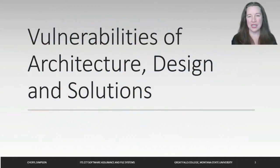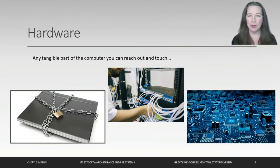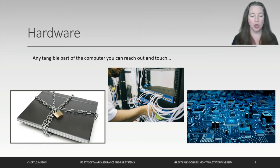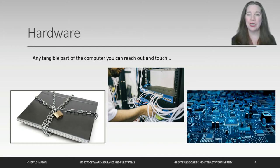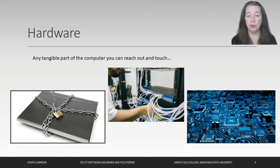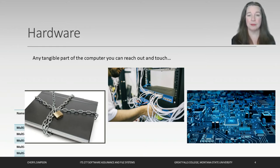The first thing we're going to talk about is hardware vulnerabilities. To understand hardware, the easiest way to explain it is it's something tangible that you can touch — your memory, your hard disk, your motherboard, your monitor, your keyboard, your mouse — something tangible. To contrast that with software, or something that you can't reach out and touch, essentially a piece of code of some type.